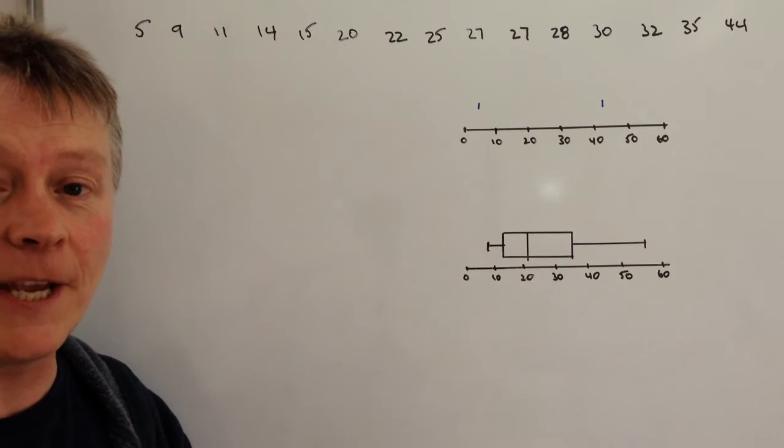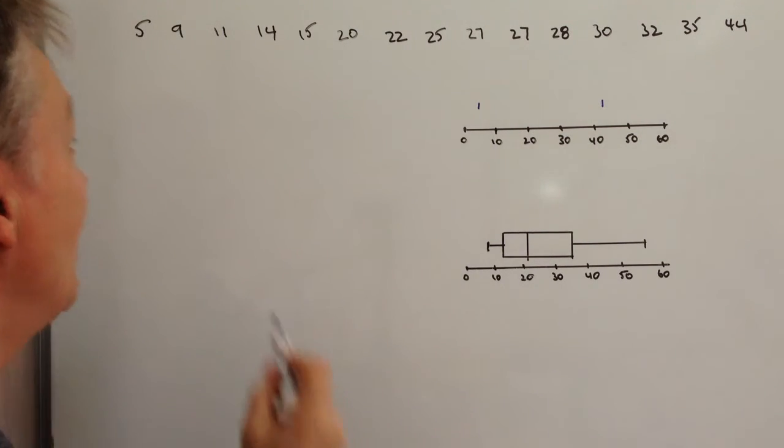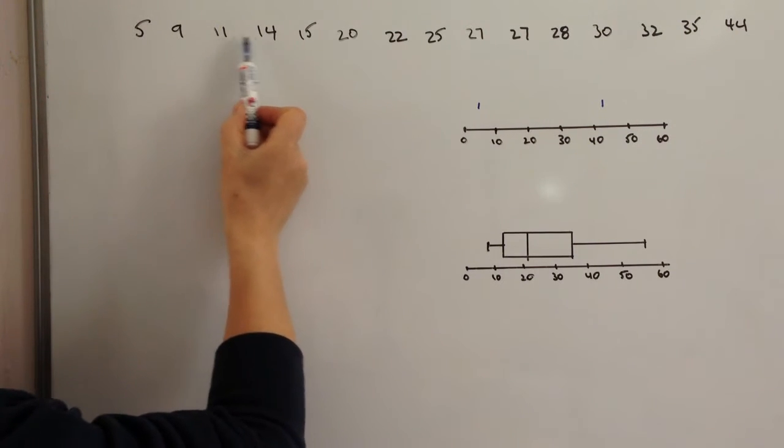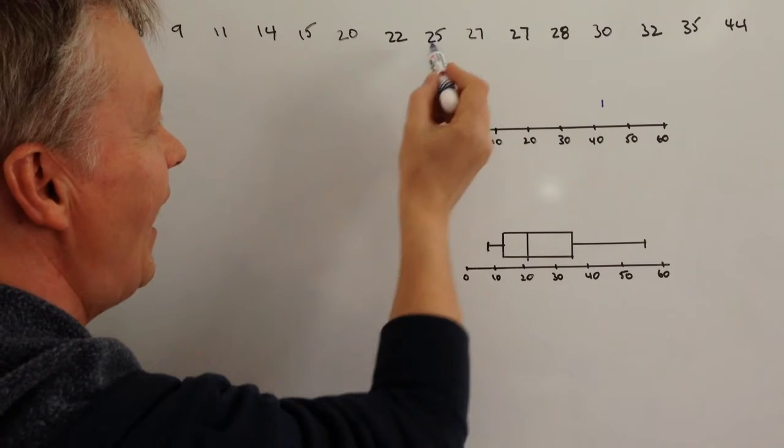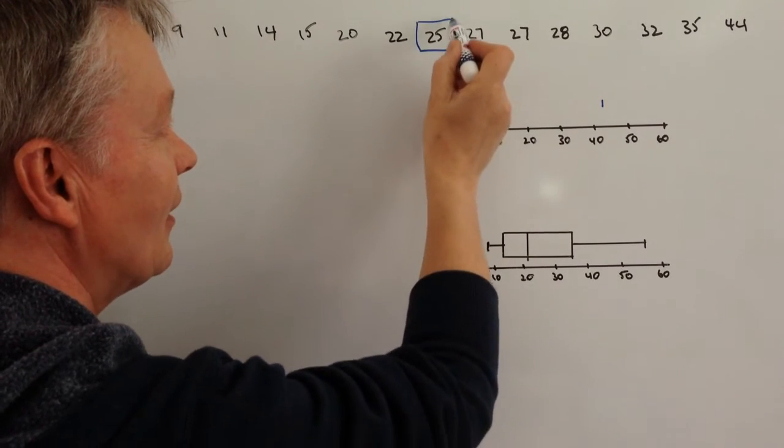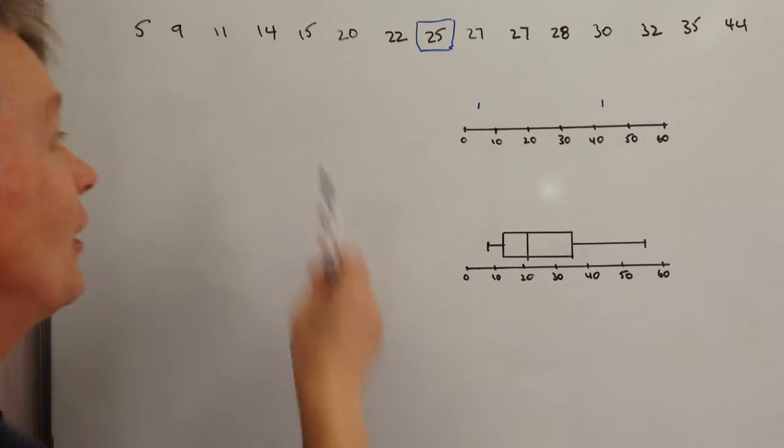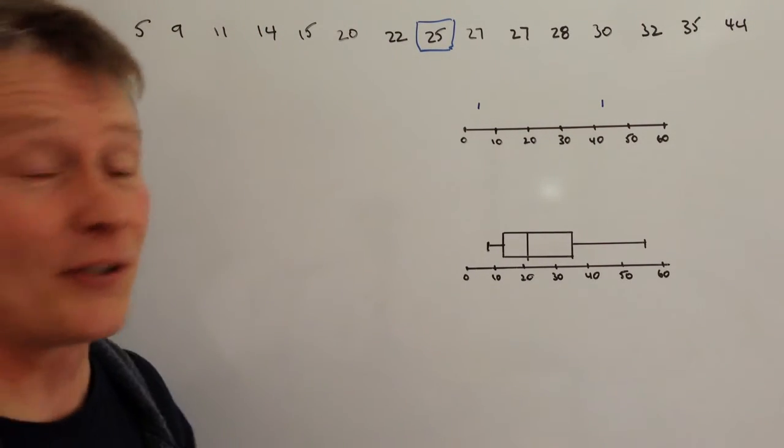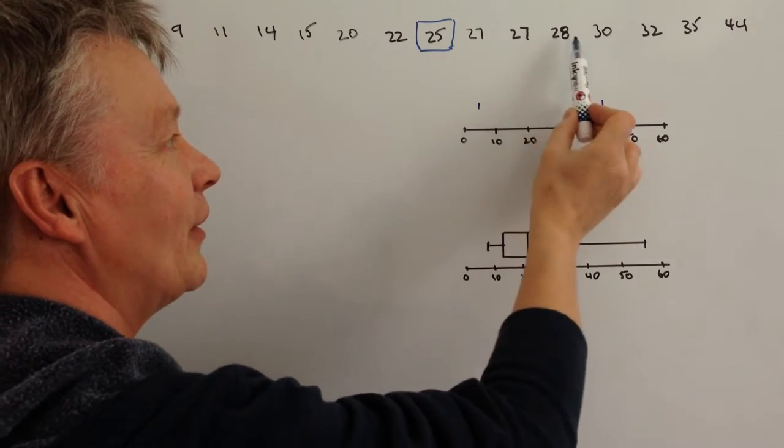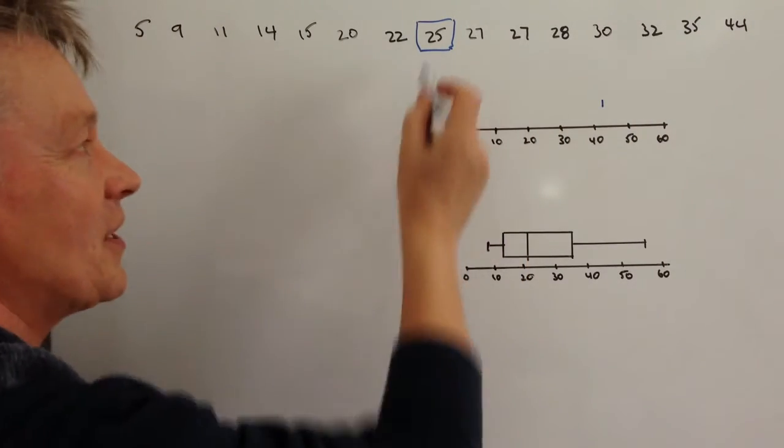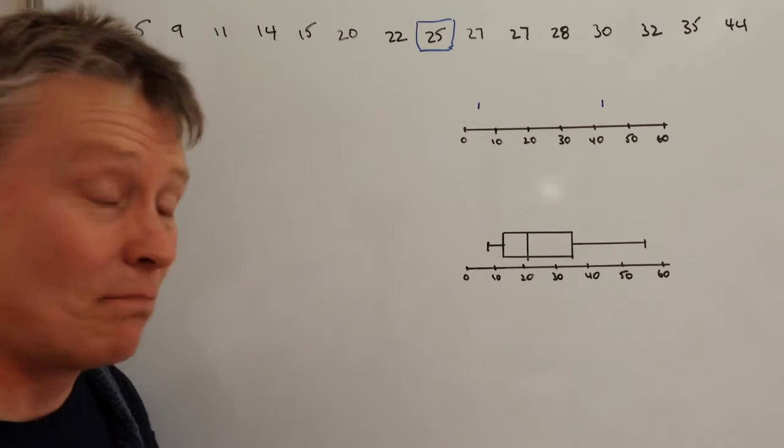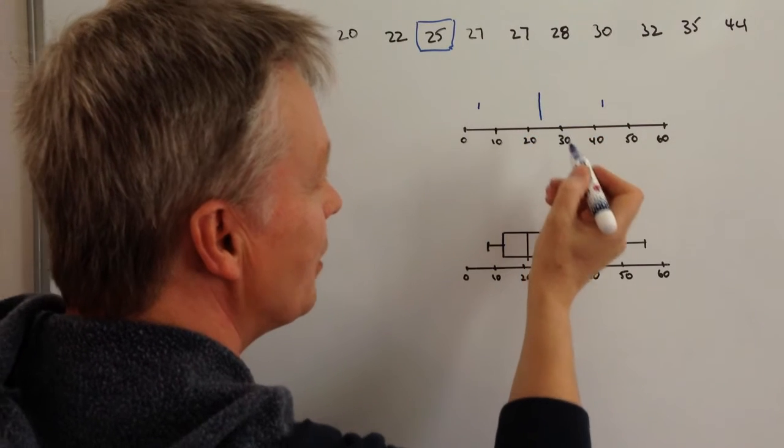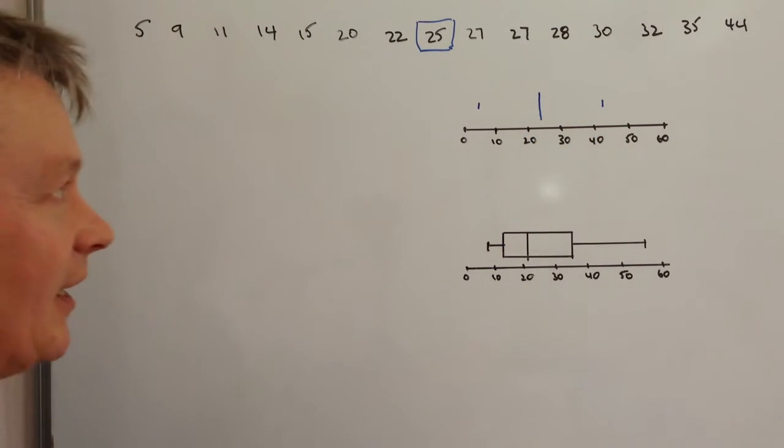OK, the next bit is we need the median value. That's actually going to be the person in the middle. So you've got the 1st, 2nd, 3rd, 4th, 5th, 6th, 7th, 8th. Now that's actually the person in the middle. If you look at it both sides, you've got 1, 2, 3, 4, 5, 6, 7 that side. And you've also got 7 on the other side. So this person is the median person, the middle person. OK, so that's number 25. So that person waited for 25 seconds.